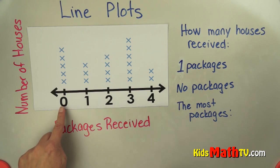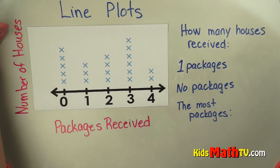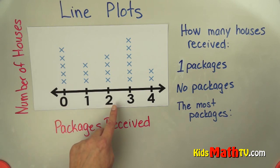Some houses received zero packages, some people received one, some houses received two packages or three packages or four packages. And this tells you how many houses in that community received this number of packages. It's a little bit tricky, you have to be very careful.